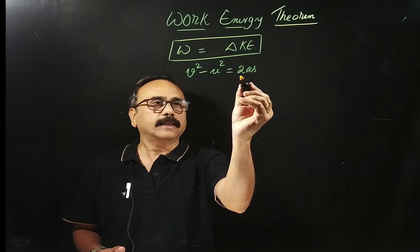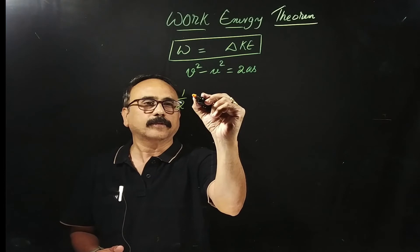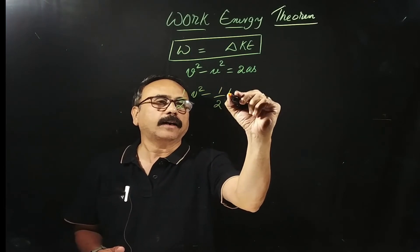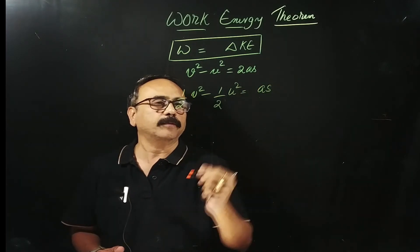Now, let us shift this 2 to this side. Then, half V square minus half U square is equal to A times S.